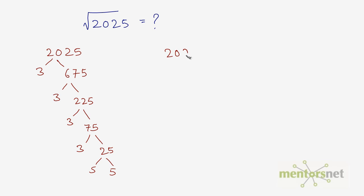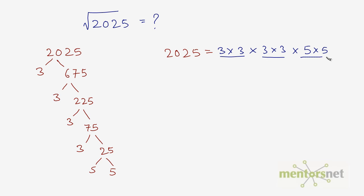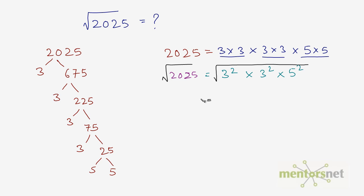So 2025 can be expressed as a product of prime factors: 3 times 3 times 3 times 3 times 5 times 5. We can group these numbers in squares, so this is equal to 3 squared times 3 squared times 5 squared. Now we can take the square root of both sides. On the right hand side, it is equal to the square root of 3 squared, times the square root of 3 squared, times the square root of 5 squared.